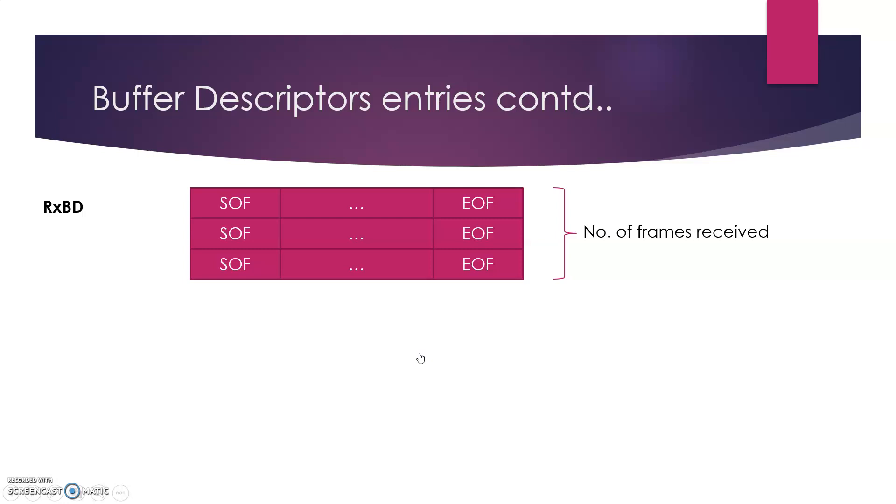And the last descriptor as we've already discussed is described by the wrap bit. Therefore, wrap would decide the end, or the number of buffer descriptors in the list would be the deciding factor for the completion of the transaction. So the DMA engine wraps back to the first BD due to the wrap bit.